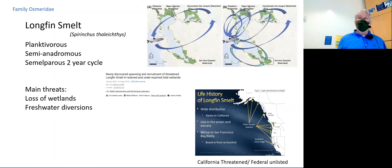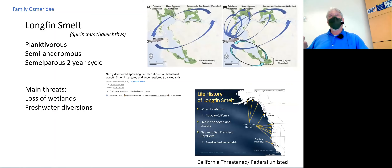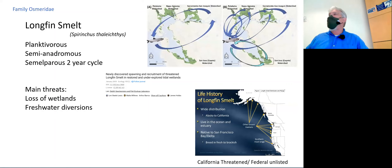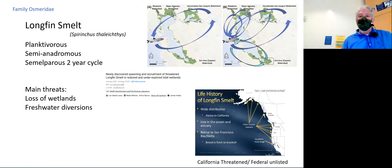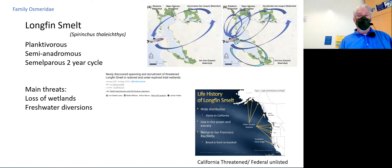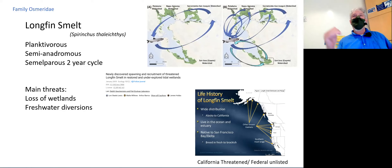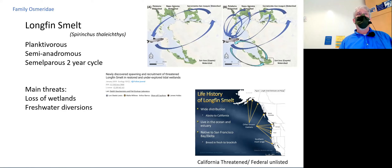The longfin smelt is found in the San Francisco Estuary. Unlike the delta smelt, which tends to be more interior, its distribution is somewhat more marine — extending almost the same range as the eulachon, slightly more southerly, with the San Francisco Bay at the southern end of its distribution. It's very similar to the eulachon — a planktivorous, semi-anadromous species — and tends to have a two-year rather than one-year life cycle.